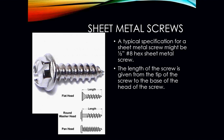For your sheet metal screws, typical specifications might be a half-inch number 8 hex style sheet metal screw. The length of the screw is given from the tip of the screw to the base of the head. For a flat head screw, the length is from the very top of the head all the way to the tip. Your round washer head type screws measure from the base of the head to the tip, and your pin would be from the base of the head to the tip as well.